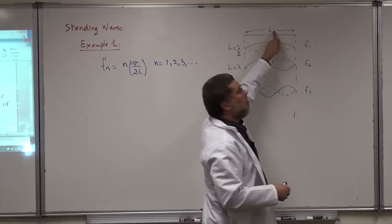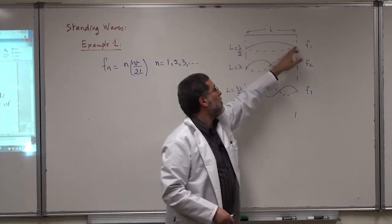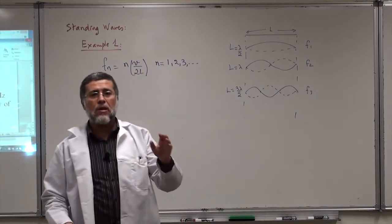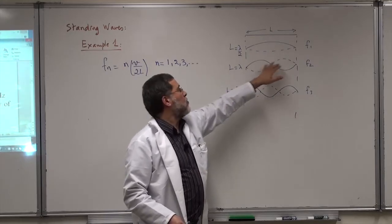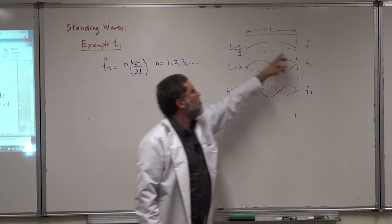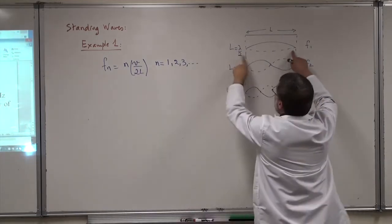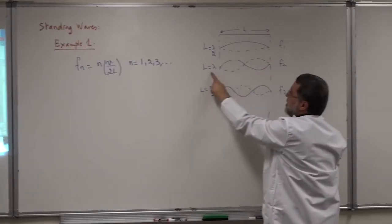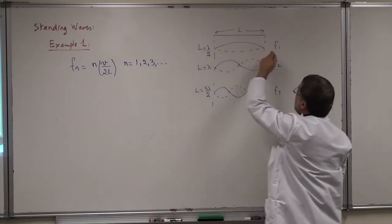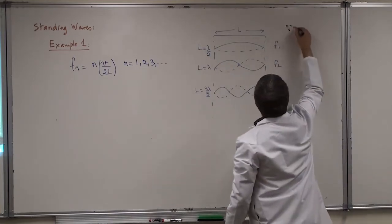This string has a length L and is at rest. Once I start sending a wave from one side, the wave travels, reflects, and at certain frequencies — called the resonant frequencies — we form standing waves where the amplitude is maximum. The length of the string is not changing; what is changing is the wavelength. In the first figure the wavelength is 2L, then L, then 2L/3. As the frequency increases, the wavelength decreases because V = λf.